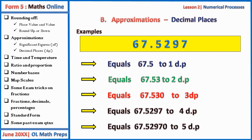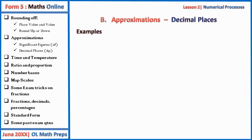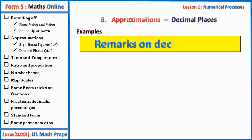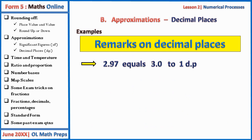To write to five decimal places, just add a zero after the seven. Remarks on decimal places: 2.97 equals 3.0 to one decimal place, because the first decimal place is nine and seven will affect it — rounding up gives ten, so we write zero and carry one to two, giving 3.0.